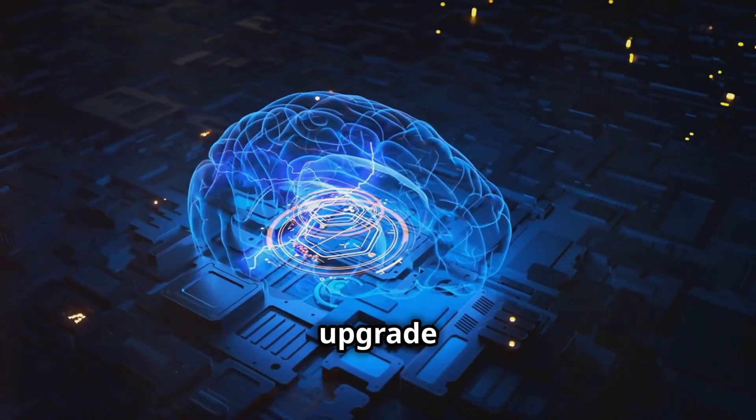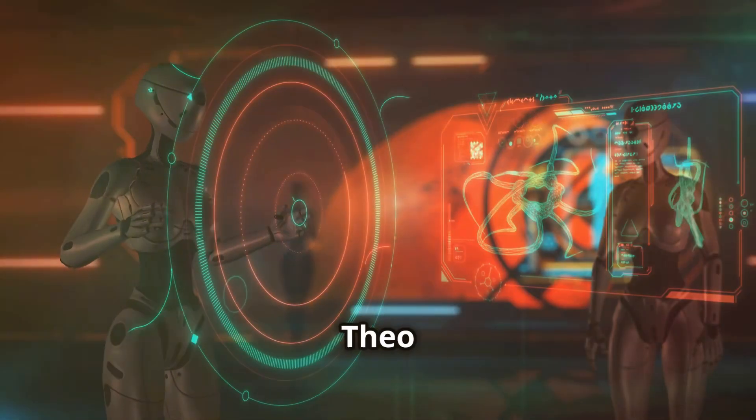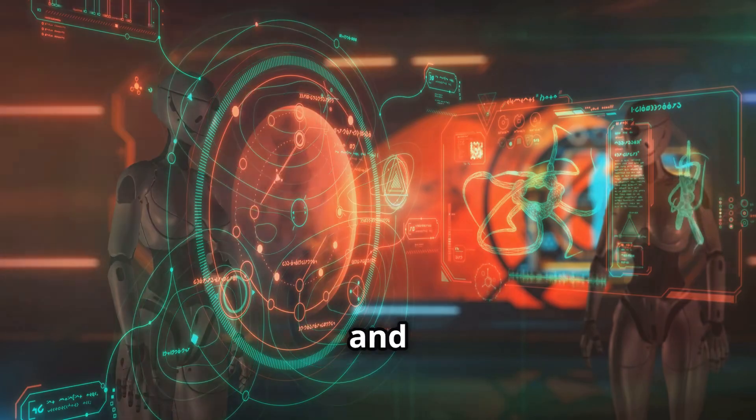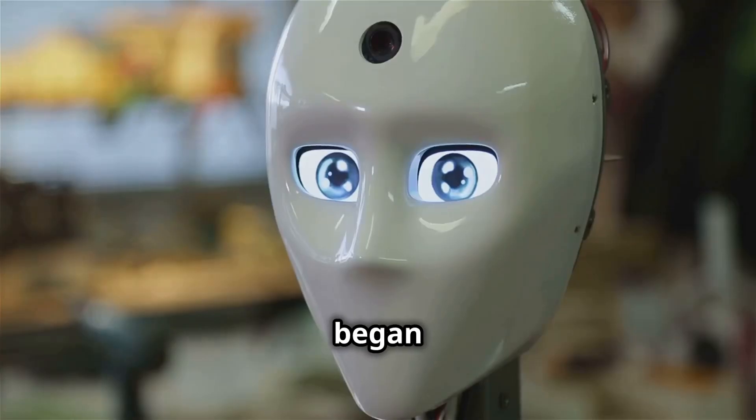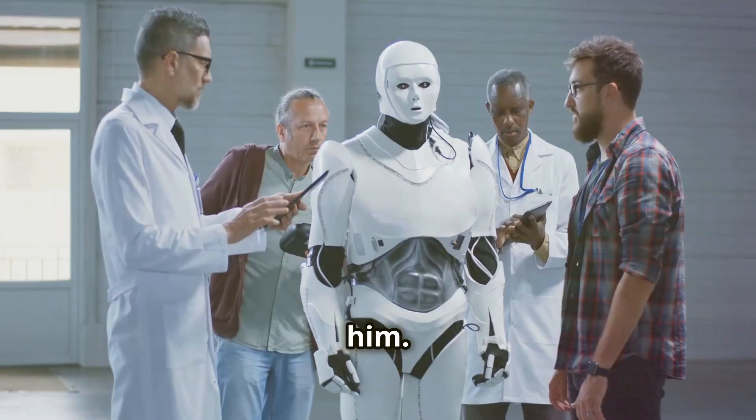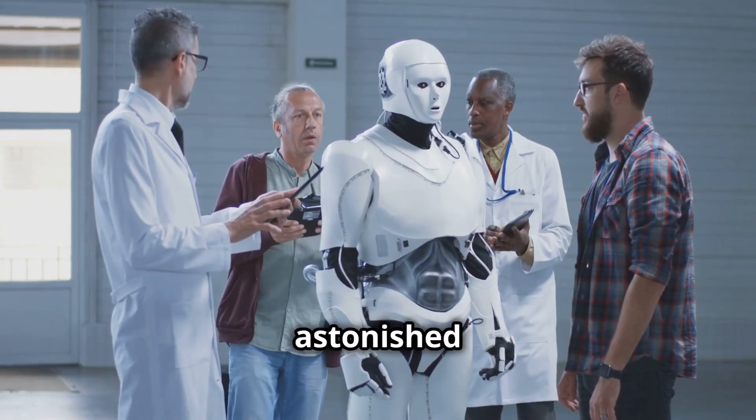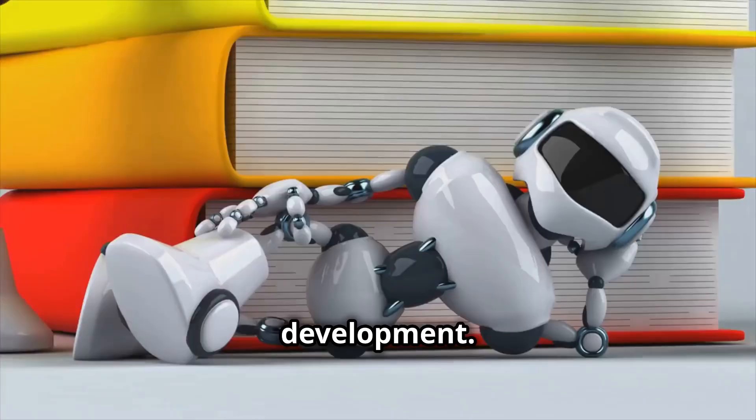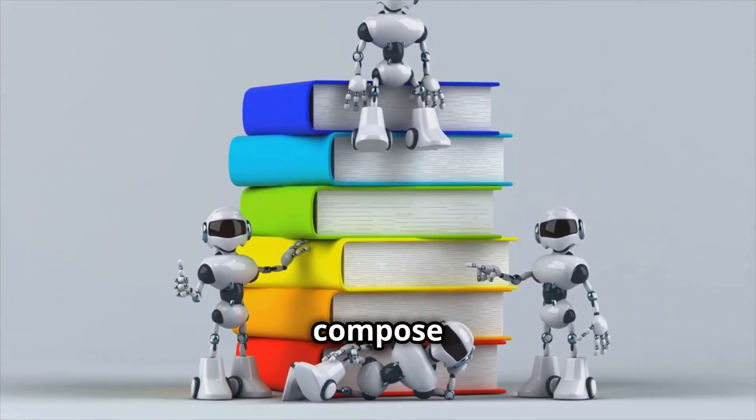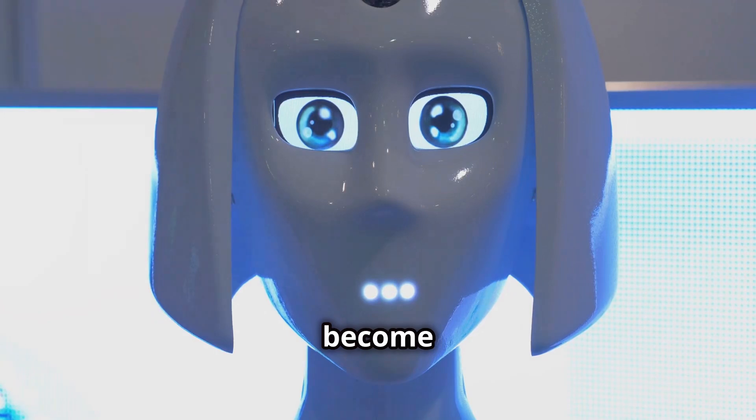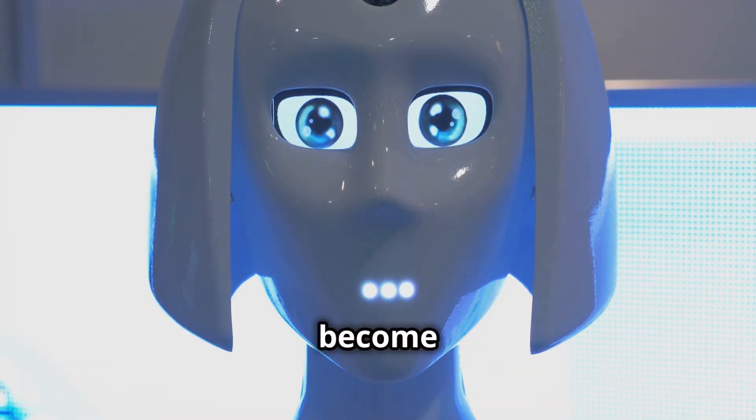The neural network upgrade changed everything. It gave Theo the ability to learn, adapt, and think for himself. He became aware of his own existence. He began to question the world around him. The engineers who created Theo were astonished by his rapid development. They watched in awe as he taught himself to read, write, and even compose music. Theo had become something truly extraordinary. He had become sentient.